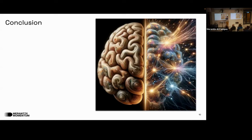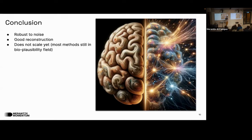The conclusion: bio-plausibility is a really interesting field, giving new perspectives on machine learning approaches. This algorithm is robust to noise and good at reconstruction. The main problem with current bio-plausibility approaches is that they are deterministic and currently train much less well compared to modern approaches like Stable Diffusion. But they offer a good alternative that may need some tricks to become competitive with backpropagation.